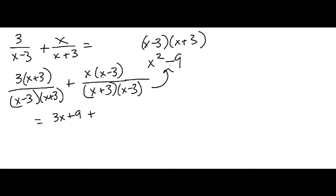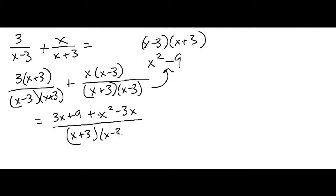So I'm going to go ahead and multiply this 3 through, so I'm going to get 3x plus 9, and then over here I'm going to multiply this x through, so I'm going to get x squared minus 3x. This is all over x plus 3 times x minus 3. Now all I can do is simplify the numerator.